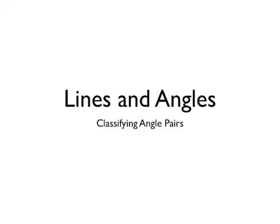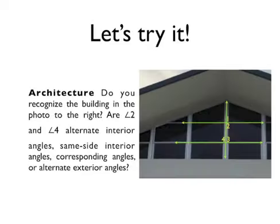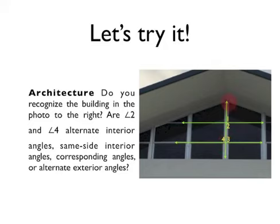And one last example here. Do you recognize this picture? It was taken on campus — see if you can find it. Here we are given two lines and a transversal, and I have numbered the angles one, two, three, and four to kind of help us out.